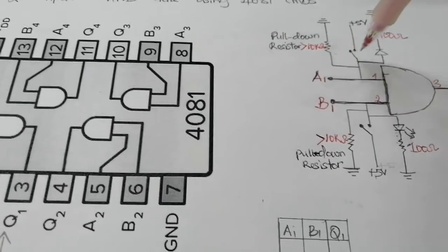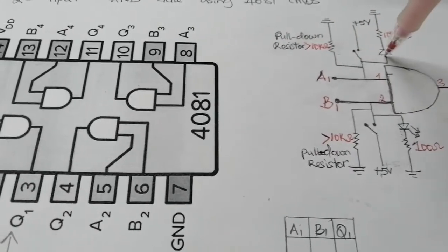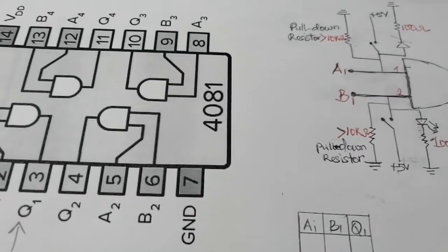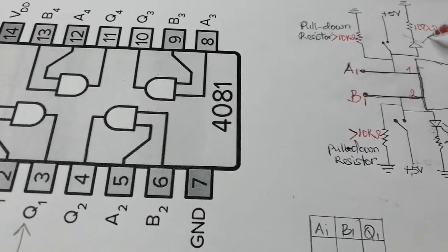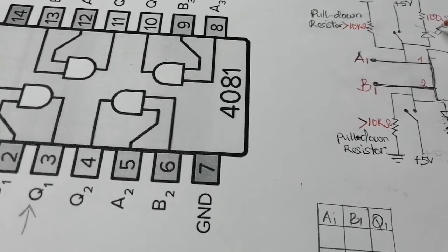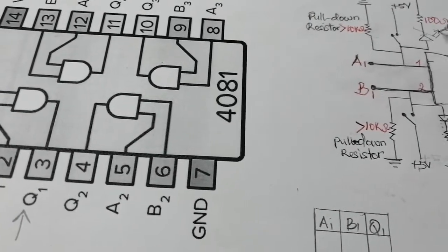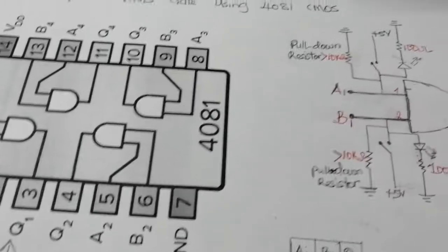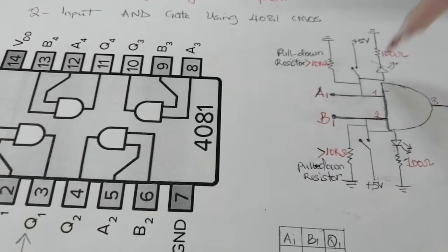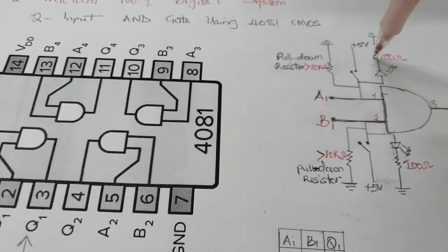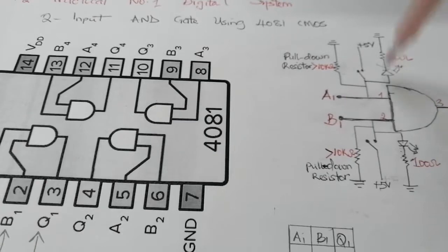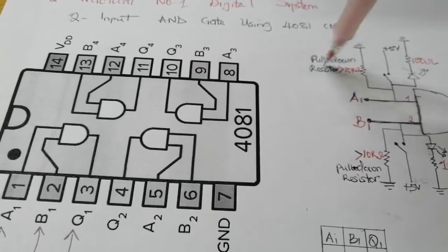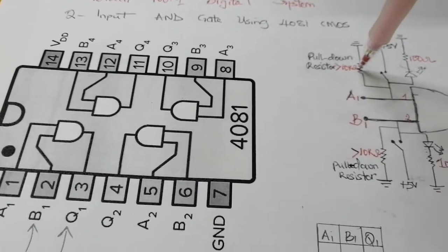I'm also connecting an LED — this is an LED, meaning it lights up. After the LED I'm connecting a 100 ohm resistor for protection, then it goes to ground. Then I'm connecting a pull-down resistor.